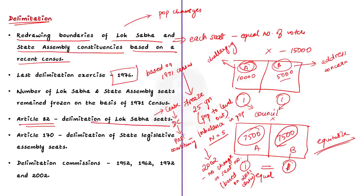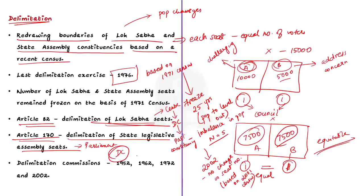Article 170 speaks about the delimitation of state legislative assemblies. Both Lok Sabha and state assembly delimitation exercises are performed by the Delimitation Commission constituted by parliament. The central government has set up Delimitation Commissions in 1952, 1962, 1972, and 2002 under respective delimitation acts for re-adjustment of Lok Sabha seats.